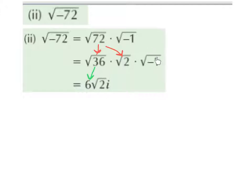The square root of minus 1 is i. The reason we did this is because we wanted to try and break up 72 into a set of factors, or a factor pair that contained a square number.